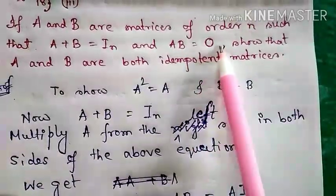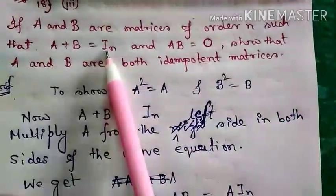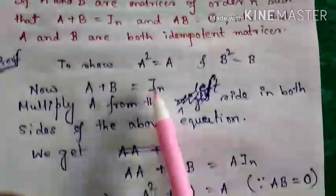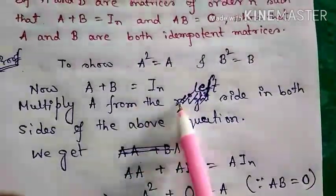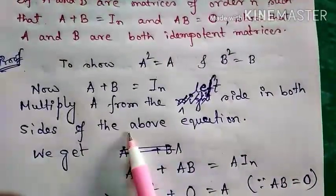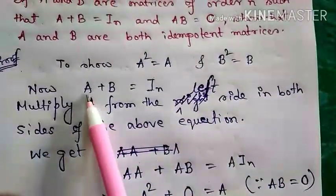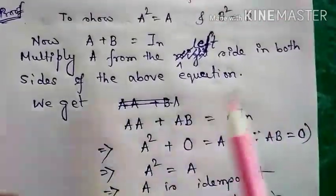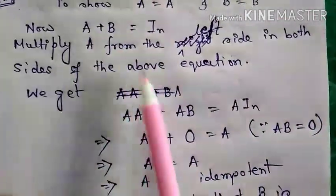Now A+B = In. Multiply A from the left side on both sides of this equation. If we multiply A from the left, we have A(A+B) = A·In.